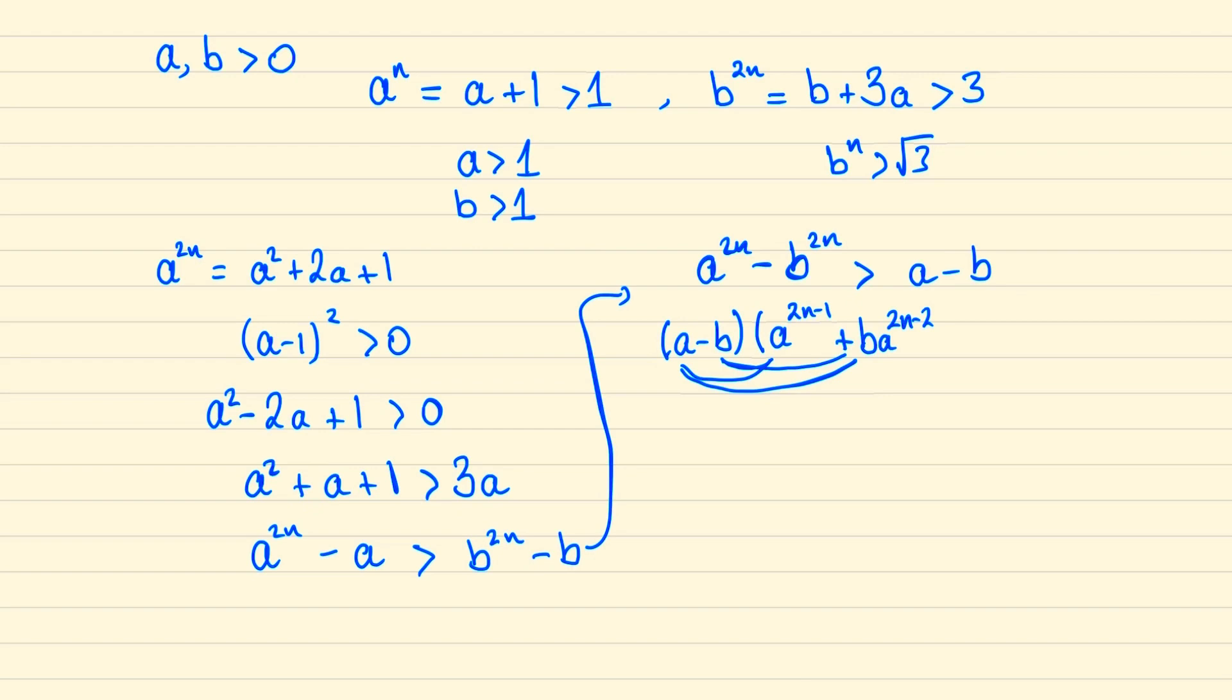A to the power of 2n minus 2, so to cancel that we'll need to add in b squared times a to the 2n minus 3, and so now we can spot the pattern that this will continue all the way upwards until we arrive at b to the power of 2n minus 1.